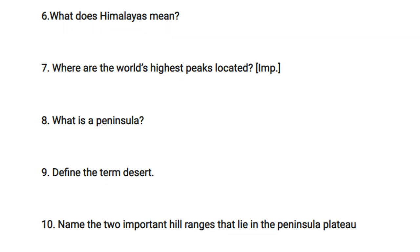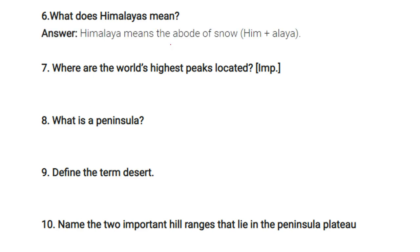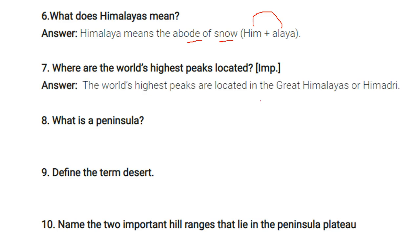What does Himalayas mean? Himalayas means 'abode of snow,' or home of snow. Where are the world's highest peaks located? They are located in the Great Himalayas, also called Himadri.